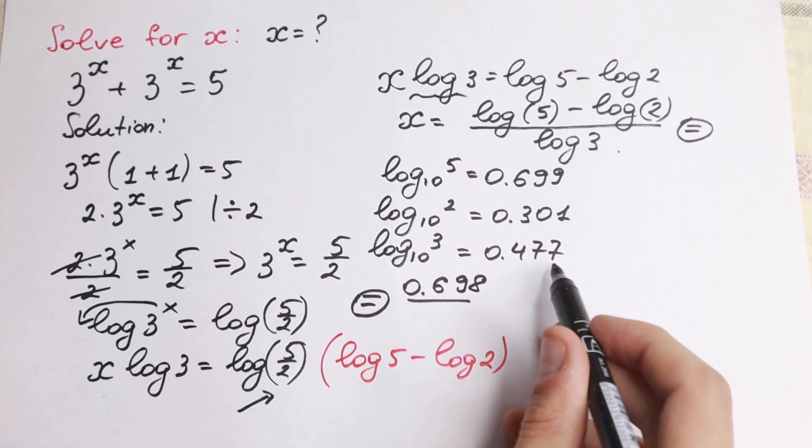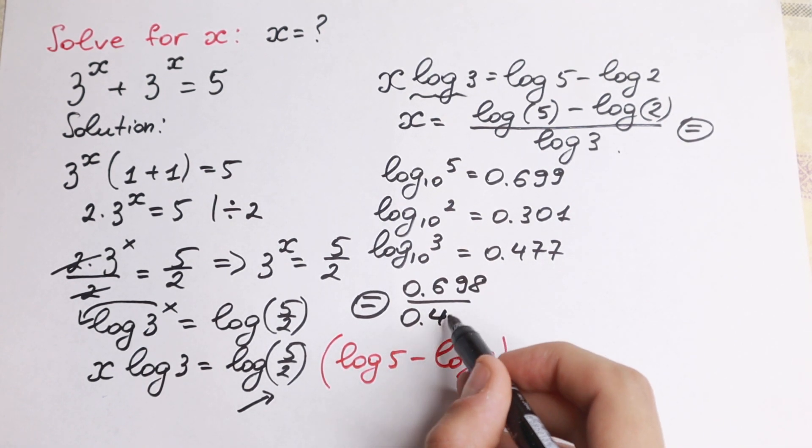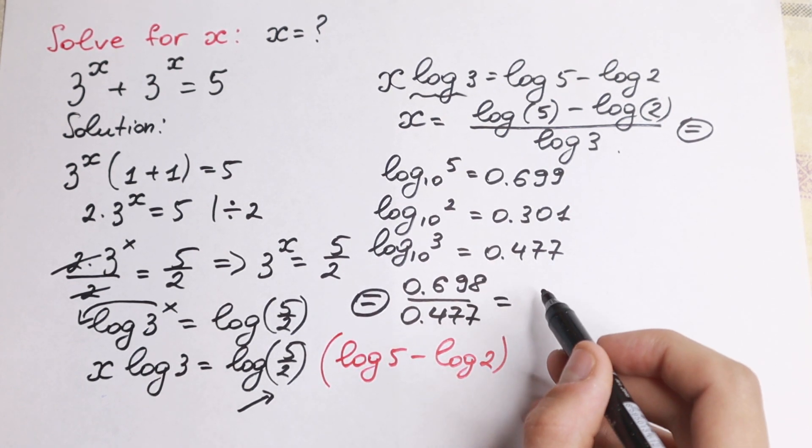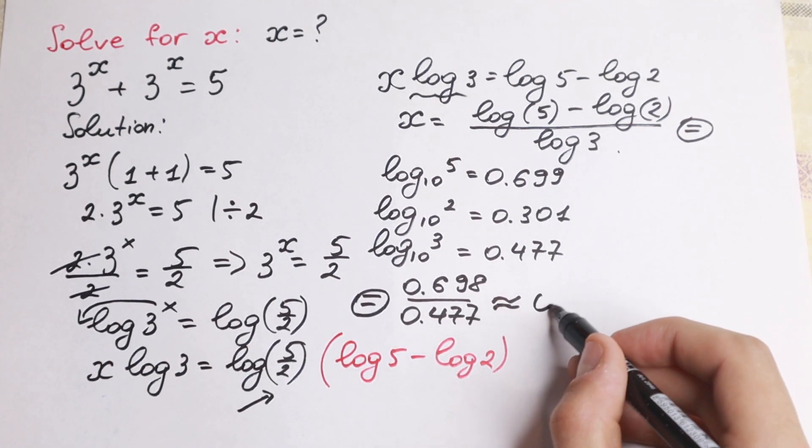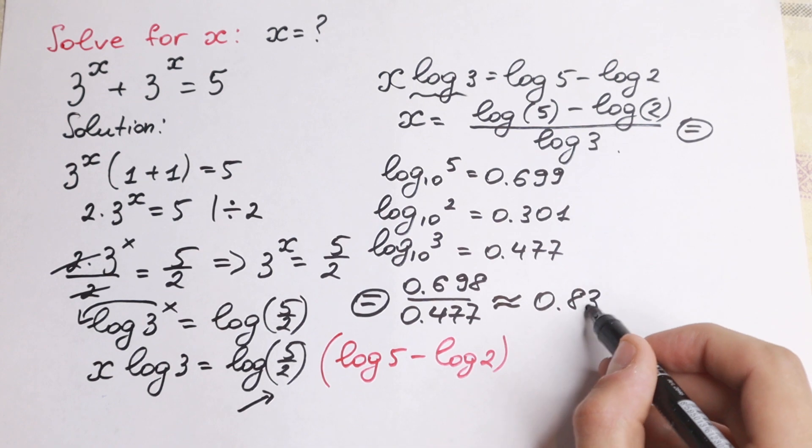And in our denominator, we will have 0.477. So if we divide it, we will have approximately equal to 0.834.